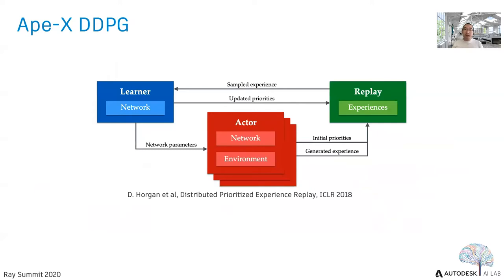To train our reinforcement learning agent, we started using APEX DDPG implemented by Ray. APEX DDPG is a distributed RL algorithm with multiple actor networks in parallel, each with an environment instance. They collect data and send it to the replay buffer. One learner network samples experience from the replay buffer, updates priorities and parameters. The replay buffer is a prioritized experience replay, prioritizing transitions based on how important they are.